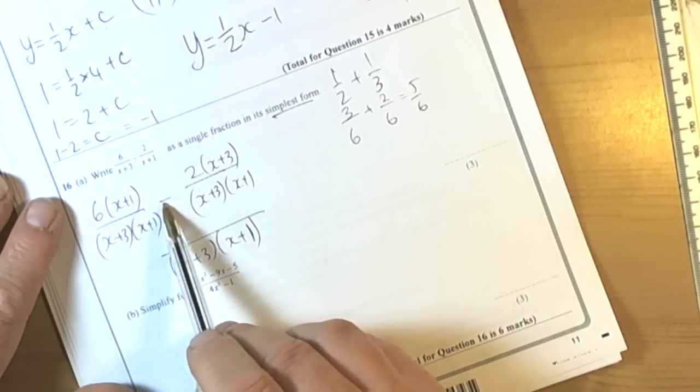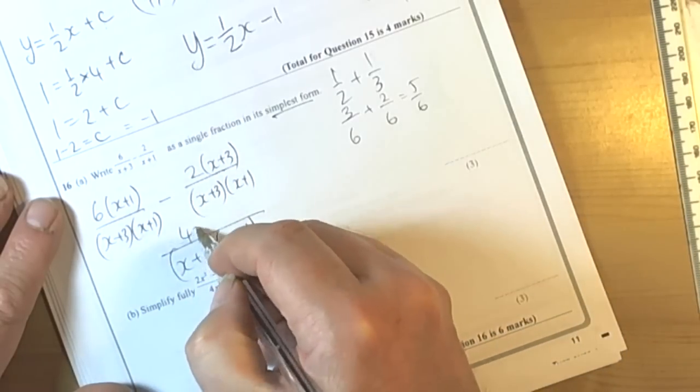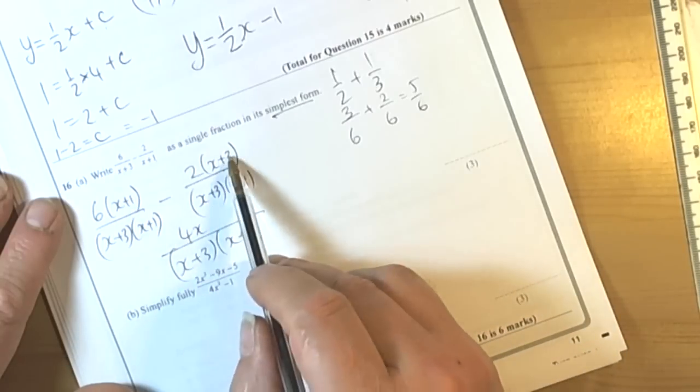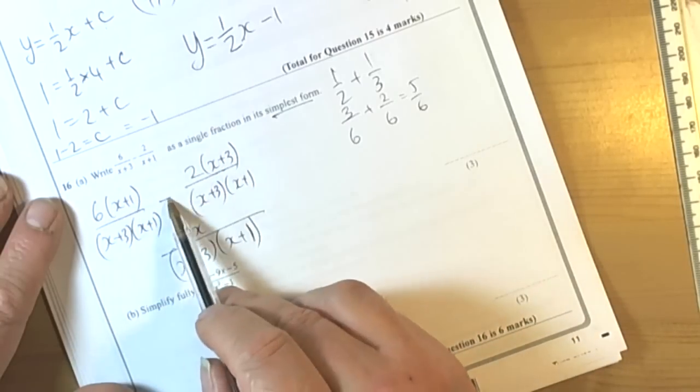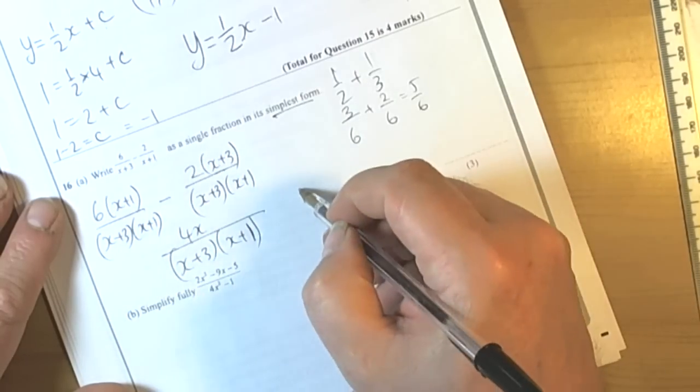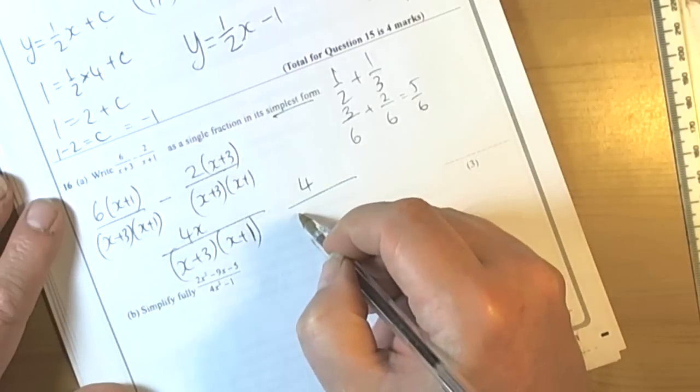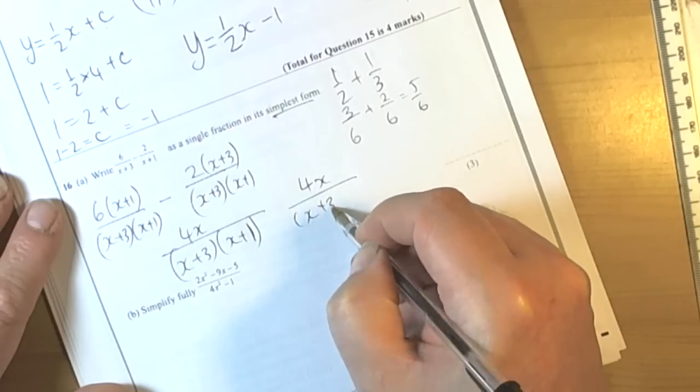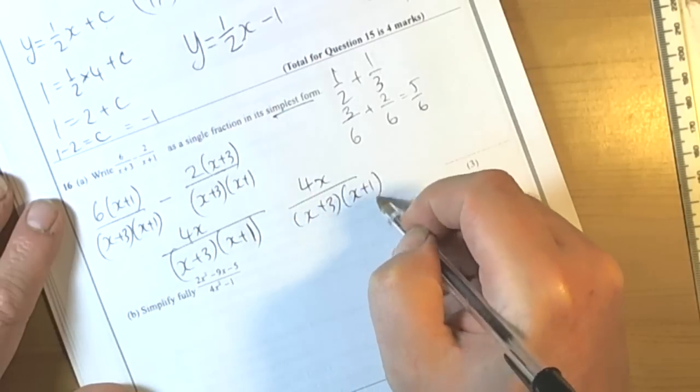So we can see from here we've got 6x take away 2x, which is 4x, and then we've got 6 times 1, which is 6, and then 2 times 3, which is 6, and 6 take away 6 is nothing. So our final answer will be 4x over x plus 3 times x plus 1.